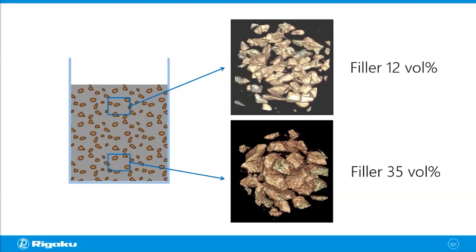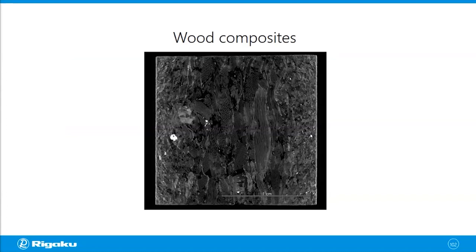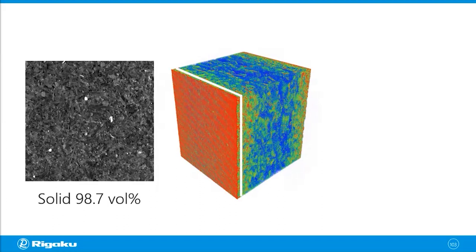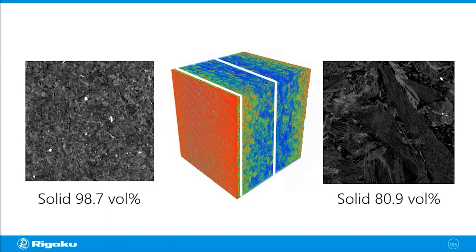Another type of composite you might find in your office is wood composites. Looking at a cross-section of a bookshelf piece, the surface area is more dense compared to the less-dense center. You can visualize the density distribution in 3D — red surface is high density, blue middle section is lower density. Taking cross-sections at different locations, you can calculate the percentage of solid or packing density: 98.7% at the surface versus 80.9% in the middle, quantitatively analyzing the gradual change of packing density.